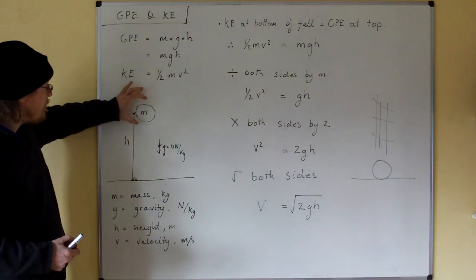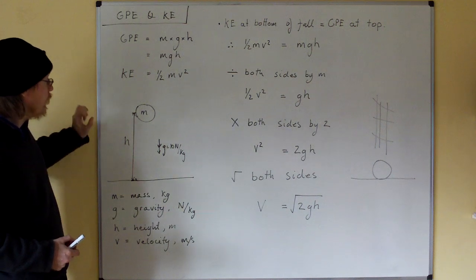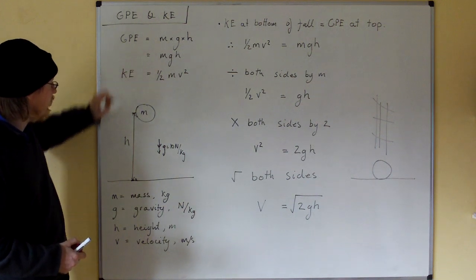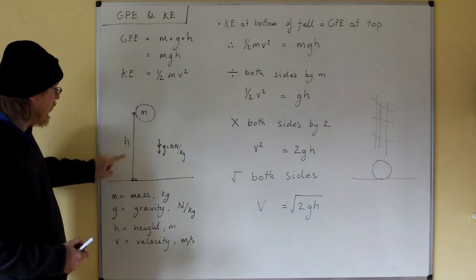So, as we lift up our mass to a height h, we get gravitational potential energy equal to mgh.